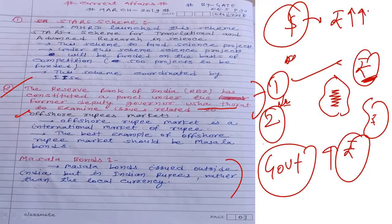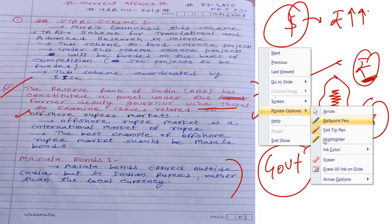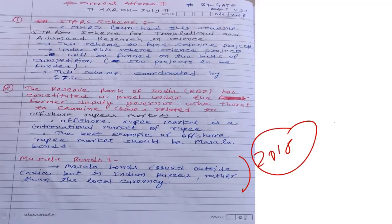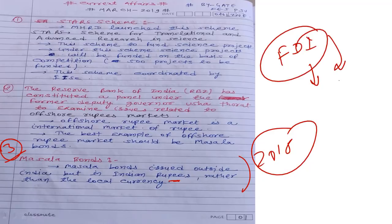To summarize: Usha Thorat committee is related to the offshore rupee market, which means the international value of the rupee. Separately, last year the government launched Masala Bonds. Masala bonds are issued outside India but denominated in Indian rupees.